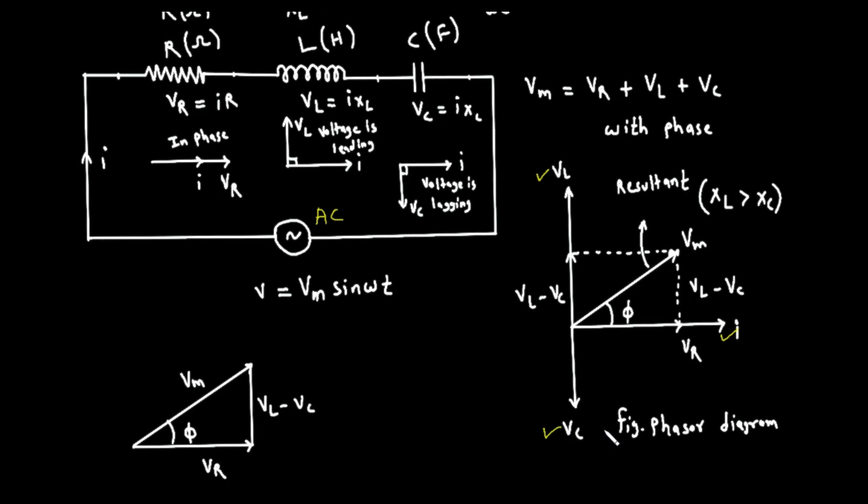Finding the total voltage. Notice that the V sub L phasor and the V sub C phasor are pointing in opposite directions. They are in a tug of war. To find their combined effect, we subtract the smaller one from the larger one. The diagram assumes the circuit is more inductive, meaning X sub L is greater than X sub C, which makes V sub L greater than V sub C. So, the net vertical voltage is V sub L minus V sub C, and its phasor points upwards.